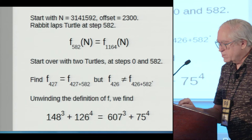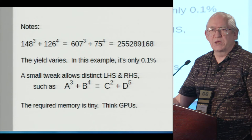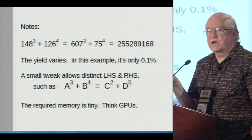And then some final notes. The actual number is 255 million and change. It's by no means the lowest solution. The yield on this varies. In this case, I ran 10,000 examples and got about a dozen hits. A small tweak lets you use two different expressions on the left and right hand side. The required memory is tiny. That's wonderful. It means you could run it on GPUs, for example. And then finally, I'll mention that it worked for cube plus fifth power and didn't work for sum of three fifth powers, finding a coincidence. And that's it.